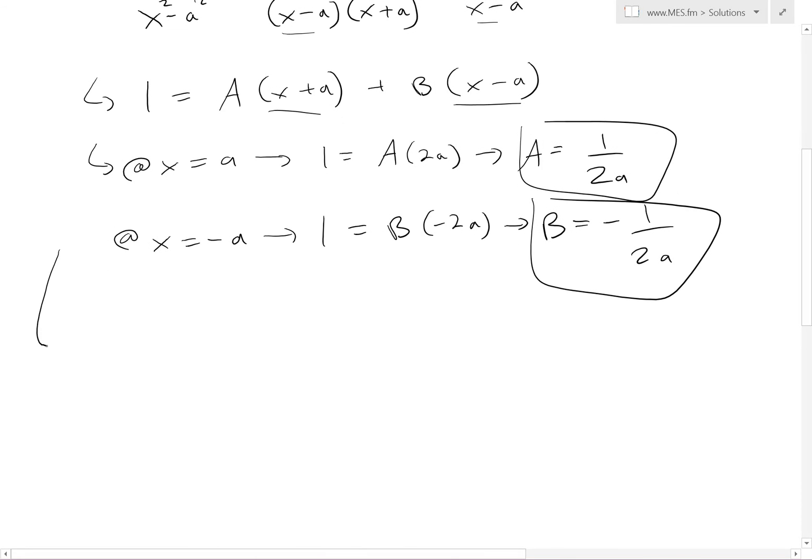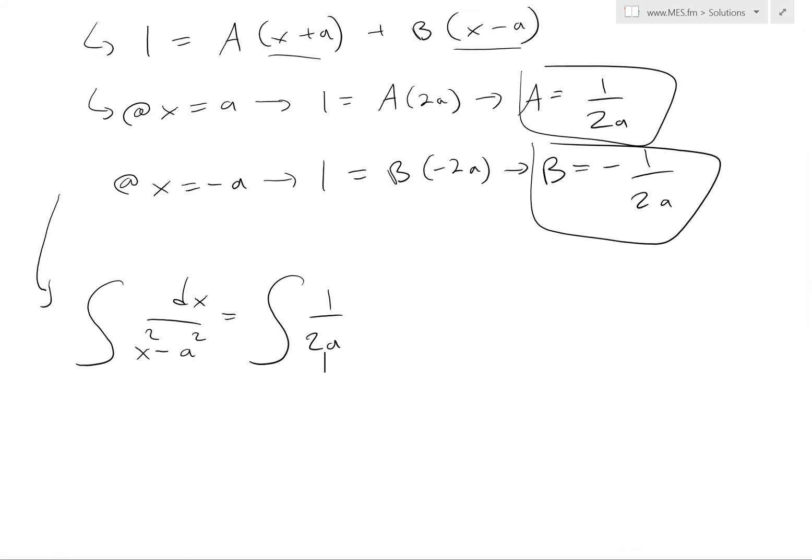So now we just plug it back into the integral. We get the integral of dx over x squared minus a squared equals the integral of 1 over 2a times 1 over x minus a, minus 1 over 2a times 1 over x plus a, all dx.